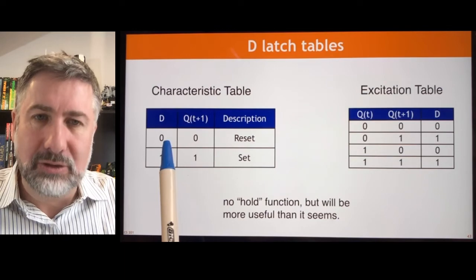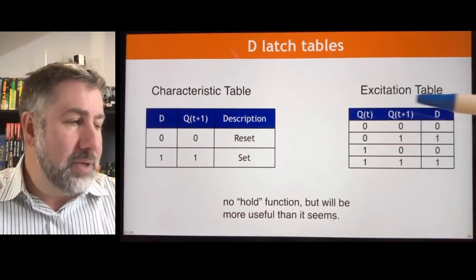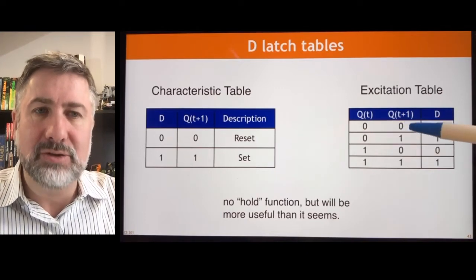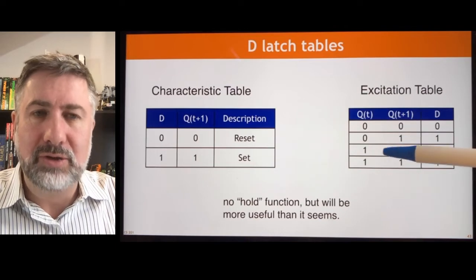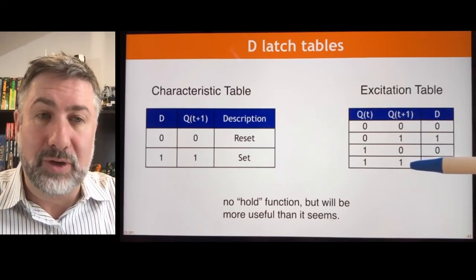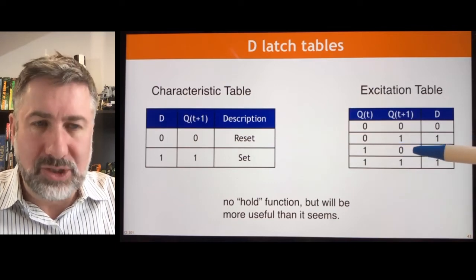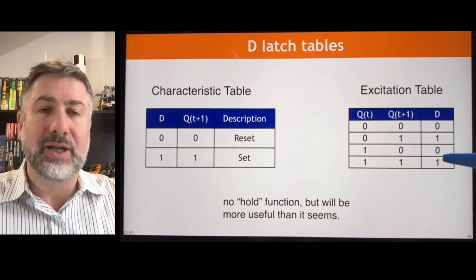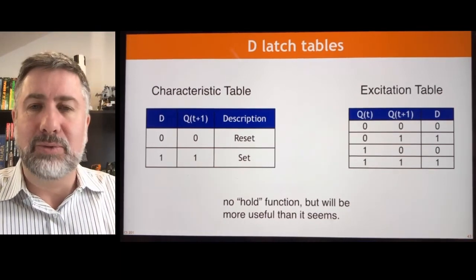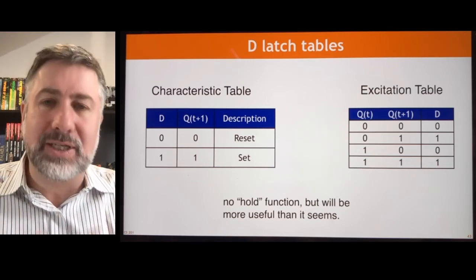If the current value on D is zero, we store a zero; if D is one, we store a one — these are our reset and set conditions. The excitation table is a bit bigger because we have four possibilities based on current state and desired next state. But as you might have figured out, the D input is just equal to the value I want to store. If current is zero and I want zero, I give it zero. If current is zero and I want one, I give it one. If current is one and I want zero, I give it zero. If current is one and I want one, I give it one. The excitation table tells us what to provide to make the device store the desired value.